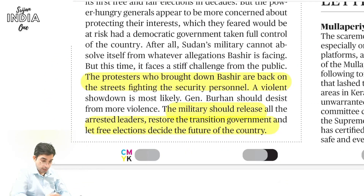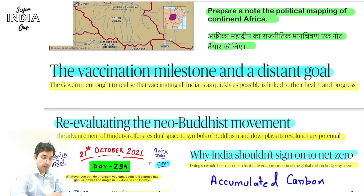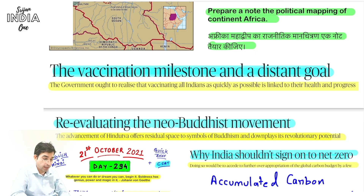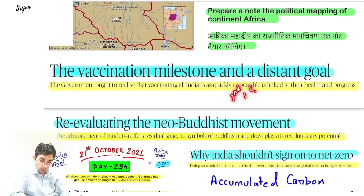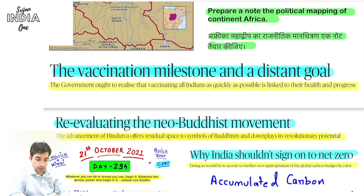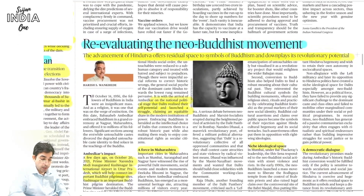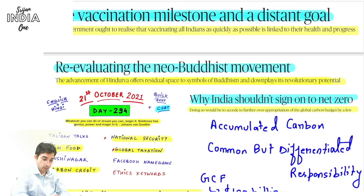Sonia Gandhi has written an article: 'Vaccination Milestone and a Distant Goal.' The argument is correct — India achieving 1 billion vaccine doses is praiseworthy. India is a big country, yet vaccine hesitancy did not come — that is praiseworthy. Going further: focus on second doses, economic recovery, standard operating procedures post-COVID, ensuring recovery for every section of society, strengthening health infrastructure, monitoring health and progress.